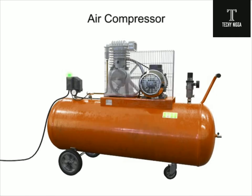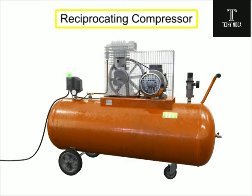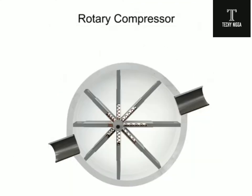Compressors with a piston as the compressing element are called reciprocating compressors. Compressors can also be made with vanes or impellers. These types of compressors are called rotary compressors.